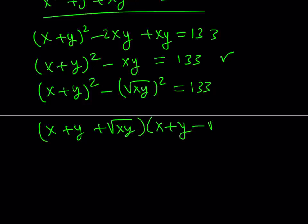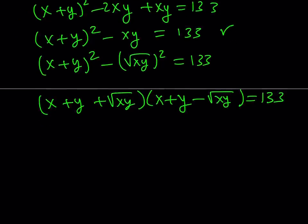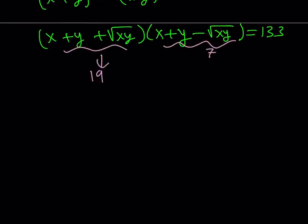So we're kind of able to factor it, even though it doesn't look factorable. And we know that x plus y minus square root of xy is equal to 7. So this is equal to 7, and by division, you find that this is equal to 19. Awesome. That gives us another system. Let's go ahead and solve it.